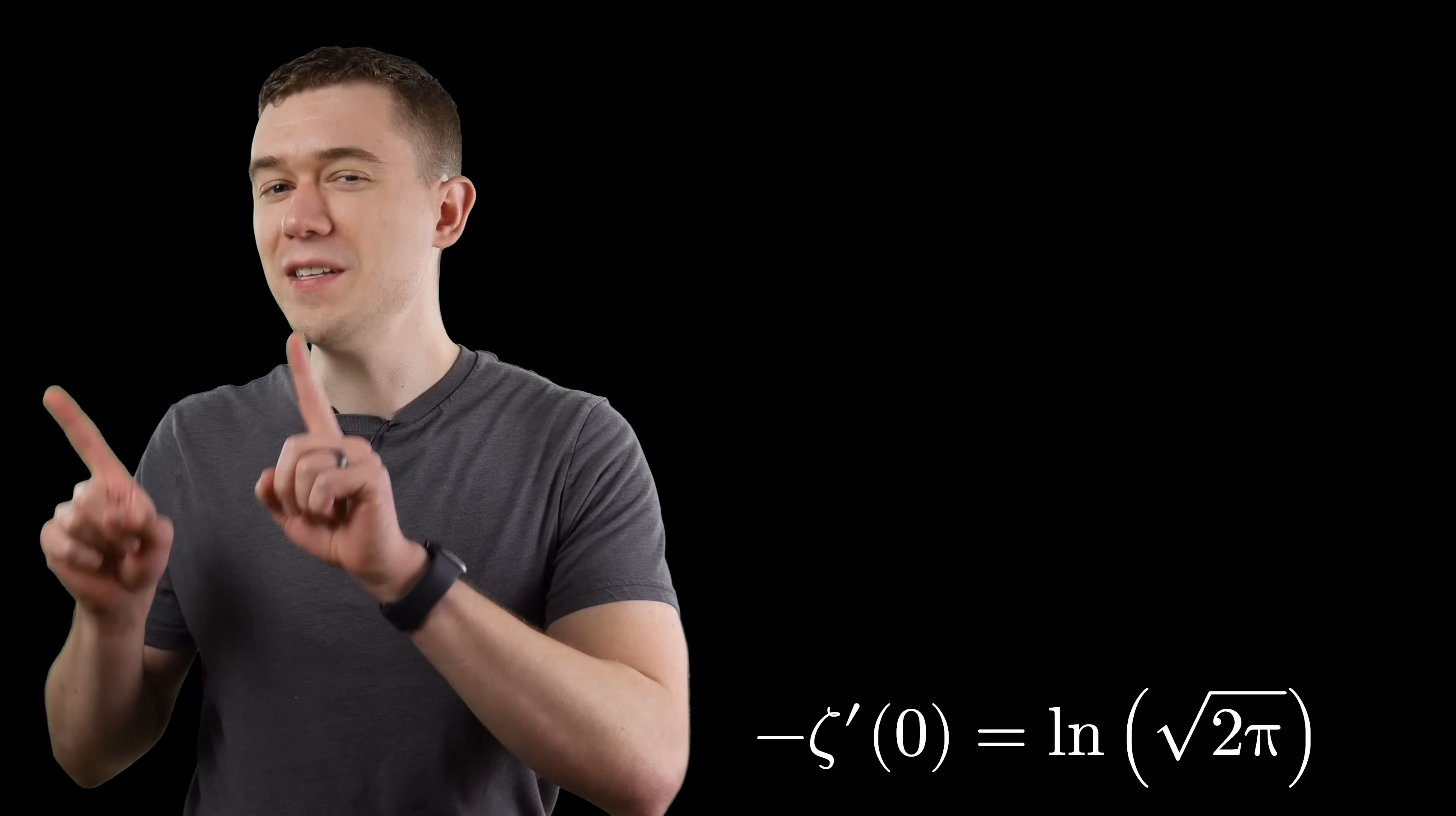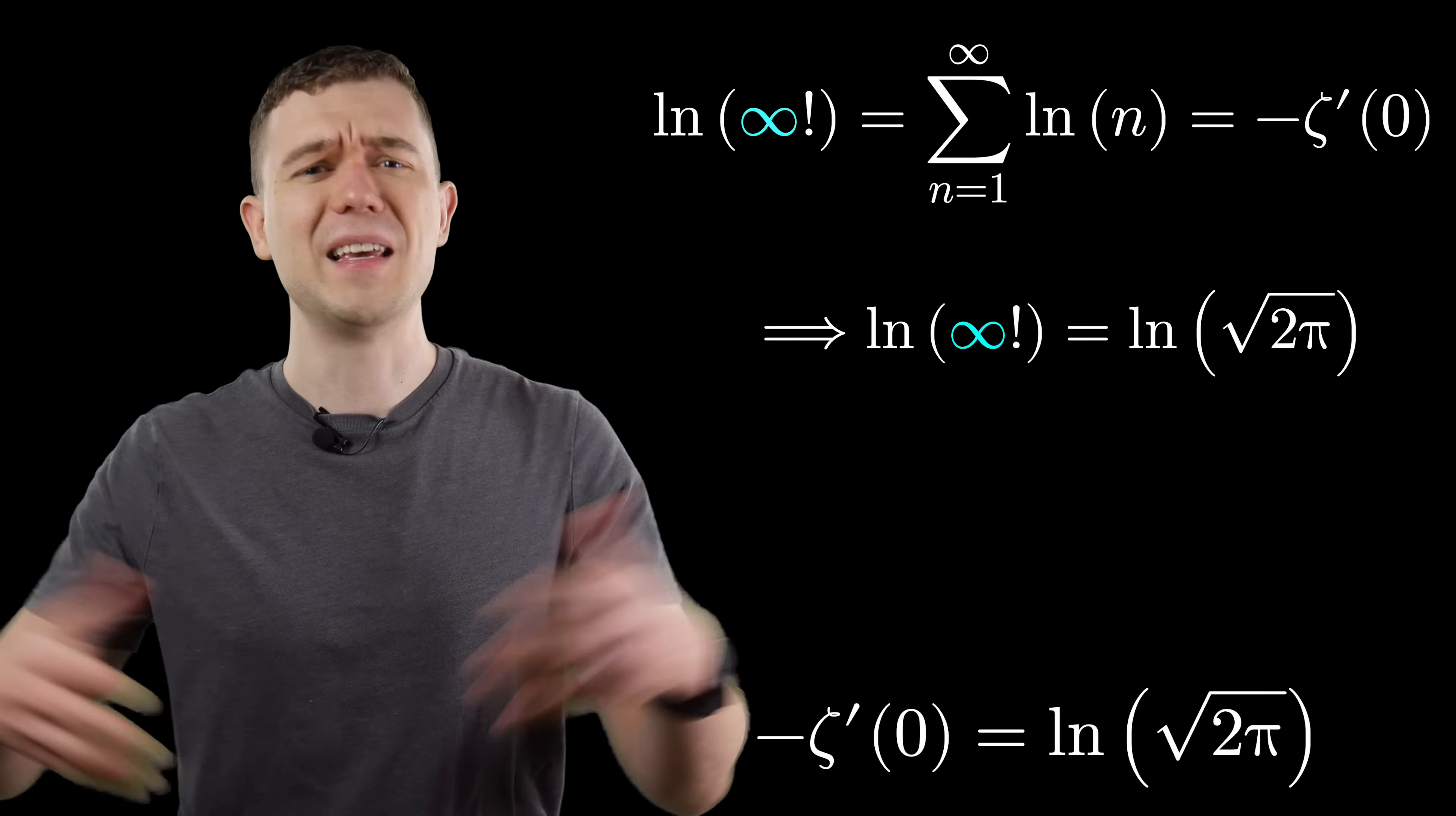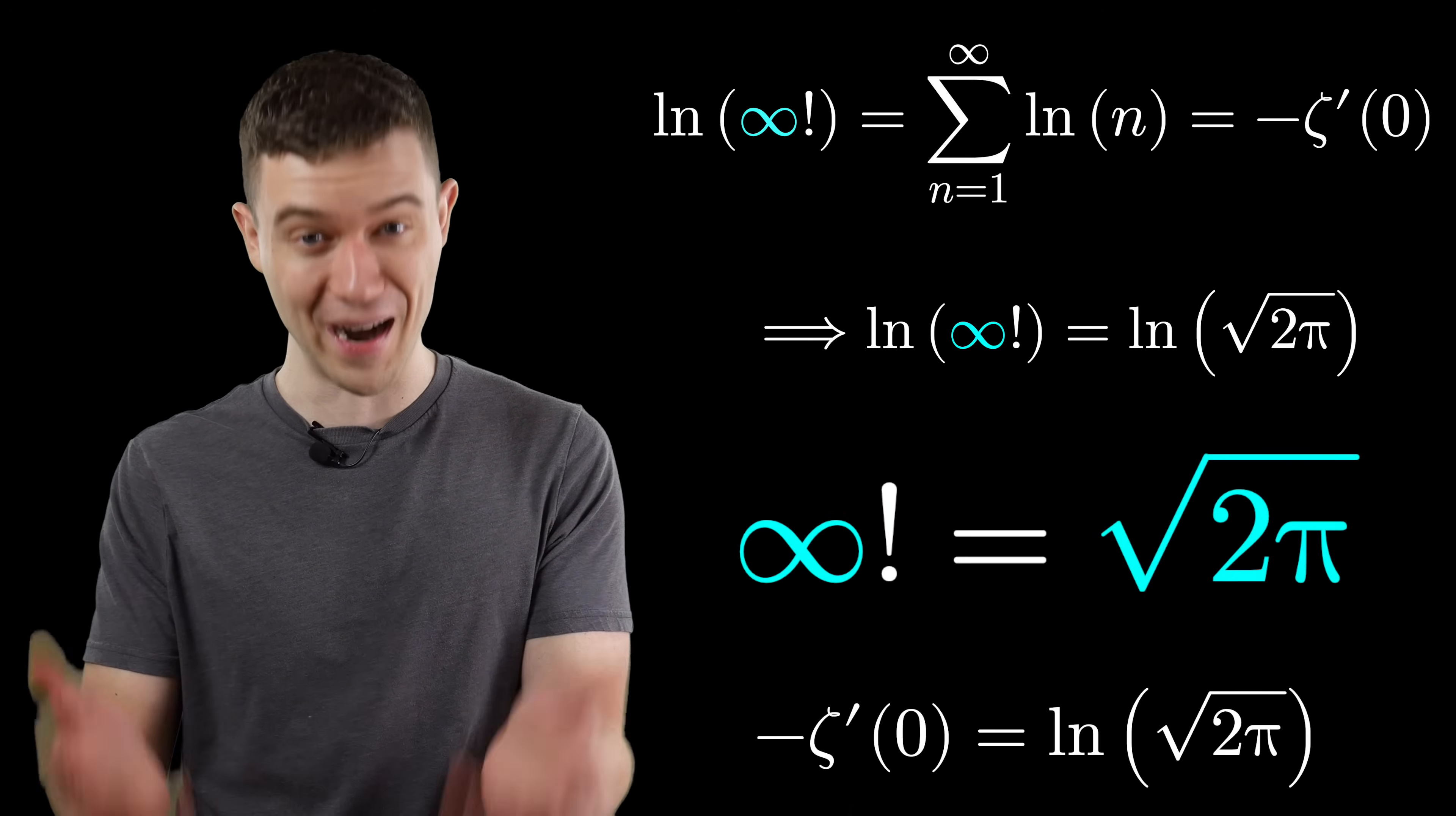And that was equal to the natural log of infinity factorial. Just cancel the LNs on both sides. We're saying that infinity factorial is equal to the square root of 2 pi.